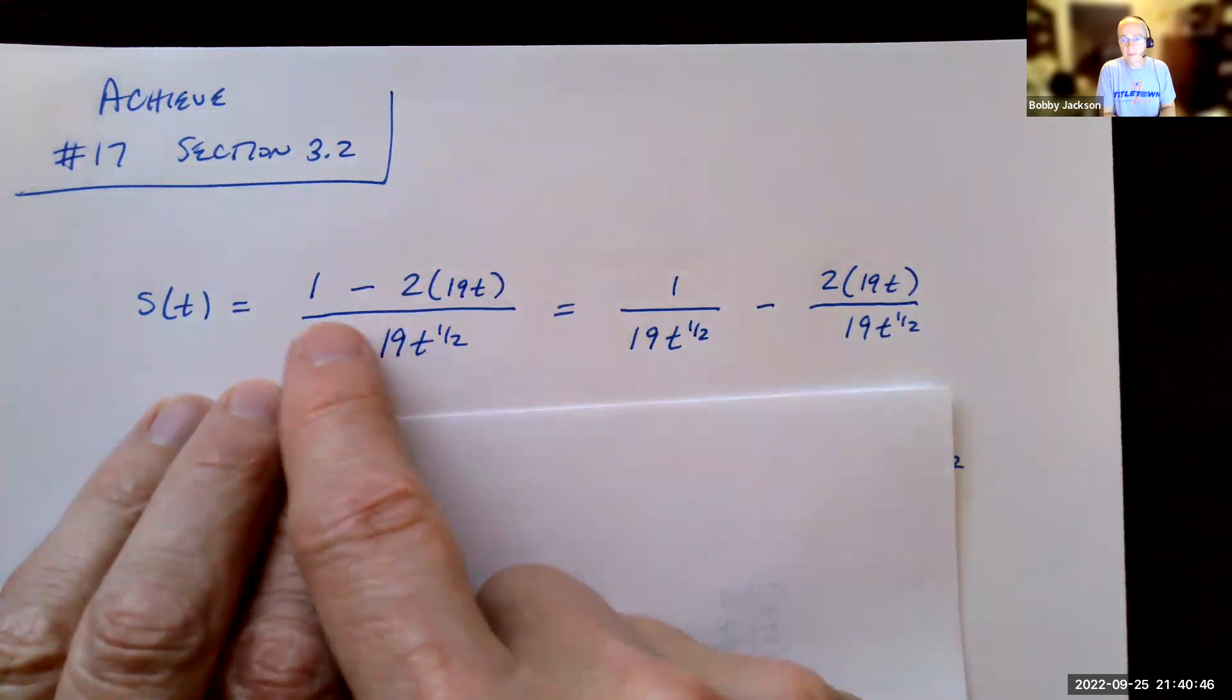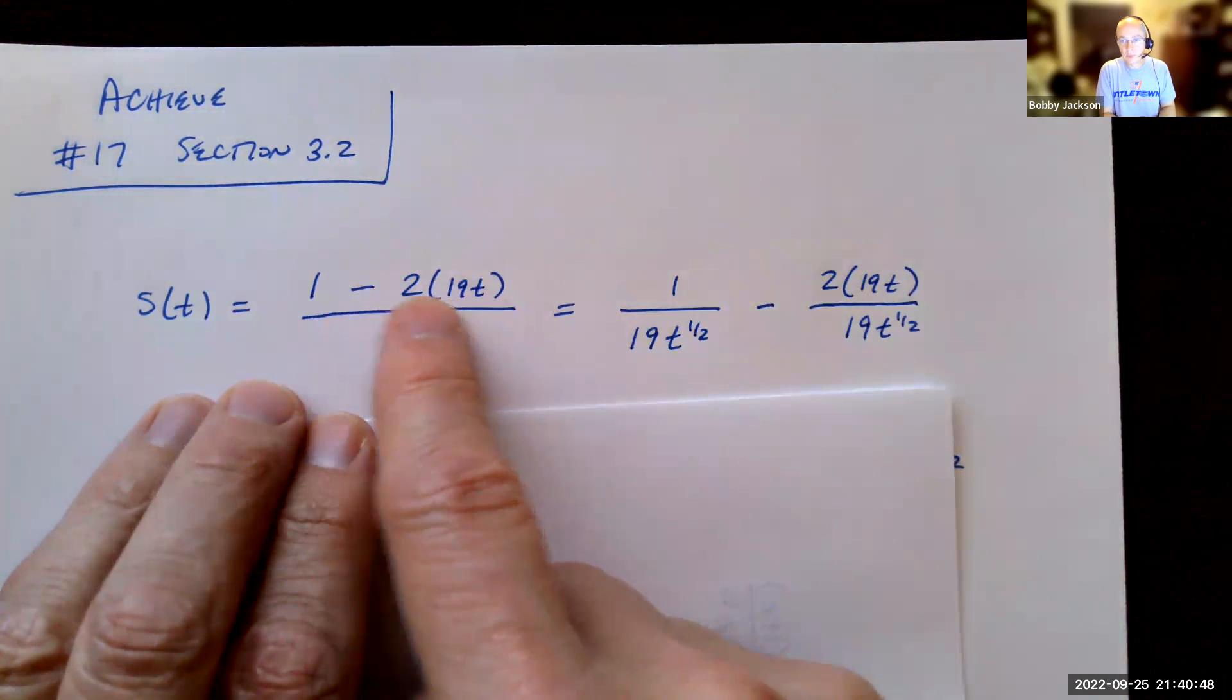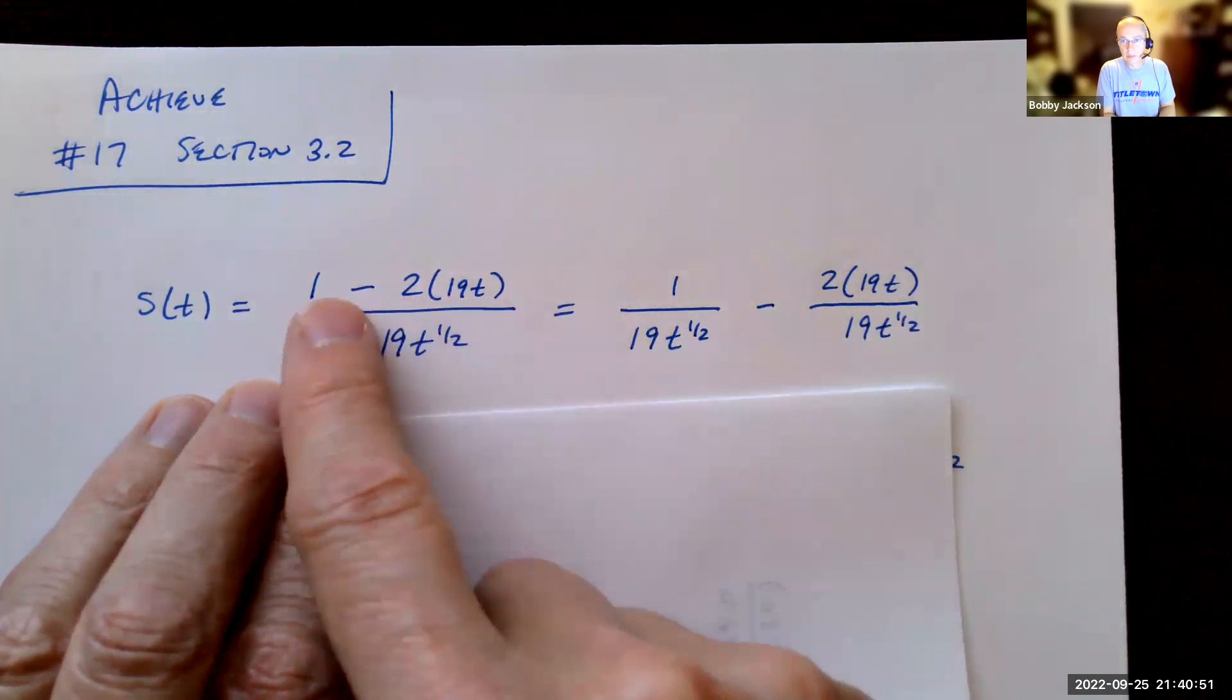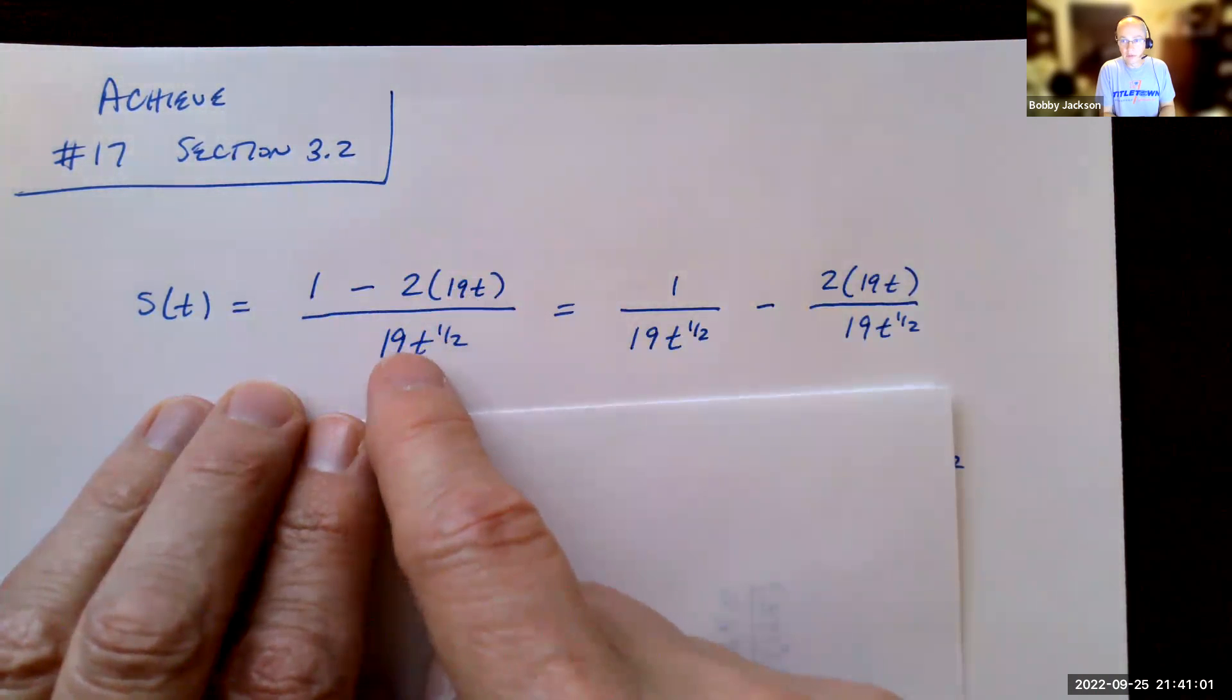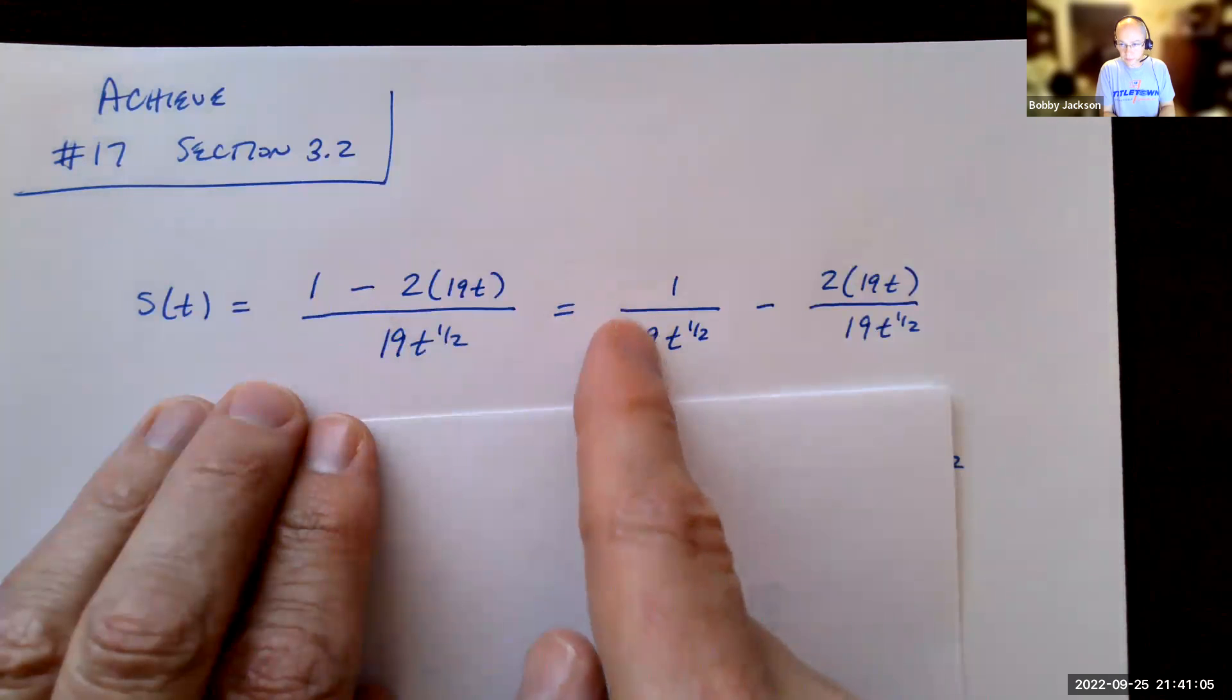Anytime you're dividing a polynomial of two or more terms, we have a binomial up here, divided by a single monomial term, I can split the fraction up. In other words, distributive property, dividing by 19t to the 1/2, I can distribute that to the 1 and to the 2 times 19t.